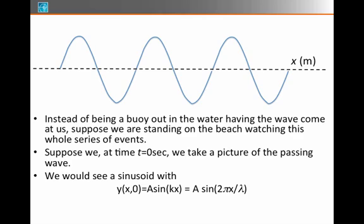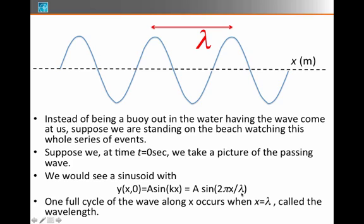We would see a sinusoid, which is y of x and zero equal to A times sine of kx, or A sine 2 pi x over lambda, because I substituted in for what k is. And we would see that there's one full cycle of this wave developing for every lambda meters along the length of the wave.